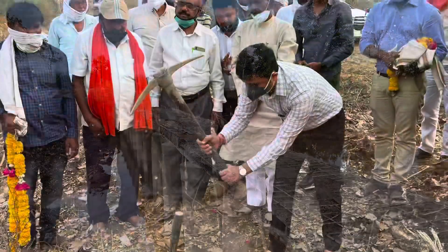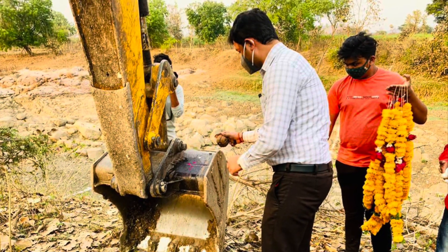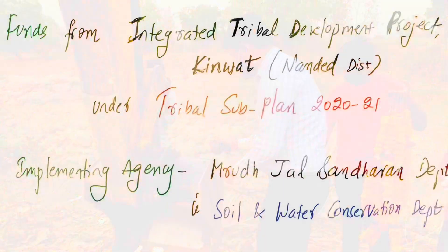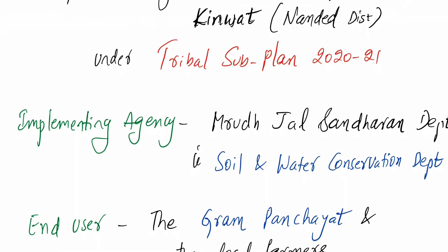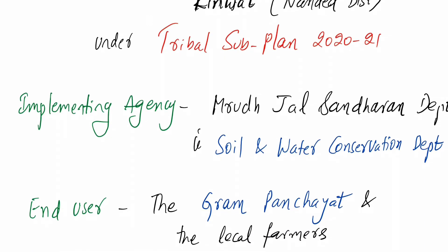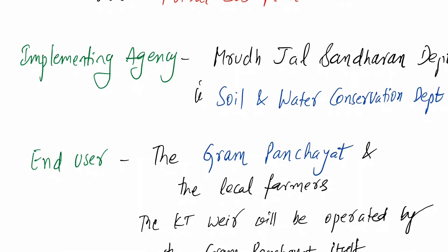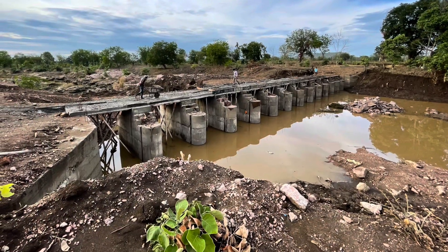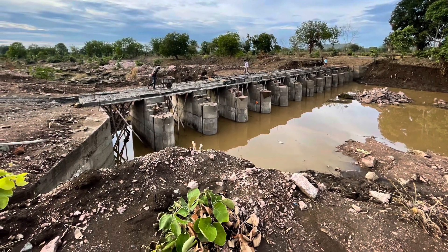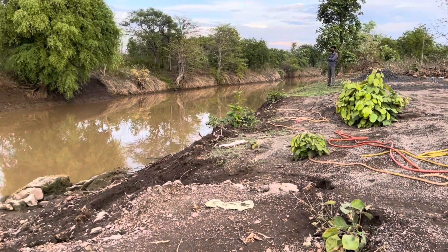The construction of this KT Ware started in late March. Funds were sanctioned through the Integrated Tribal Development Project under Tribal Sub-Plan 2021. The implementation agency is the Soil and Water Conservation Department, and the end user is the Gram Panchayat.